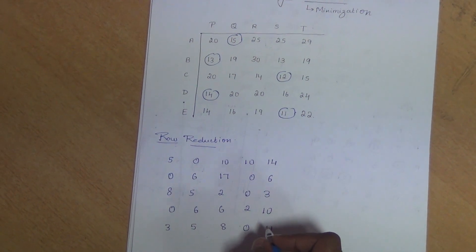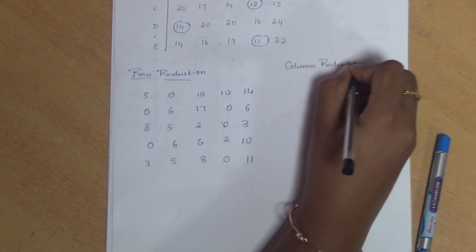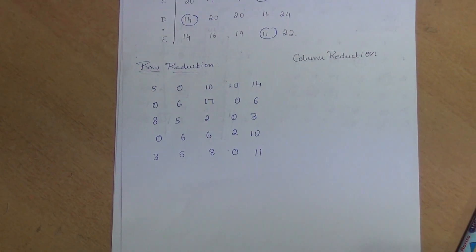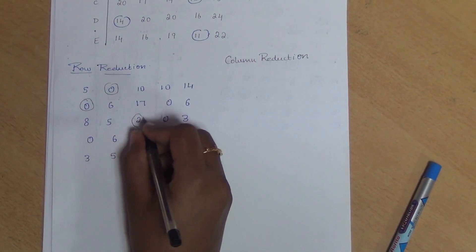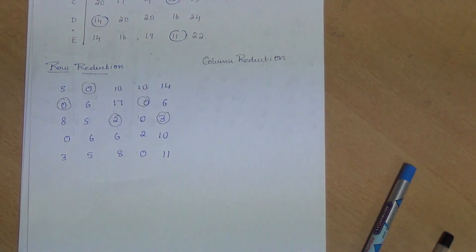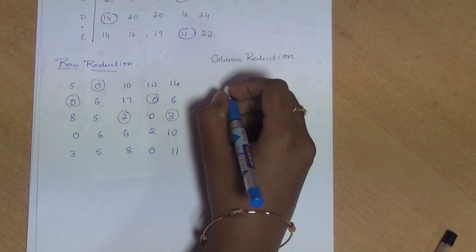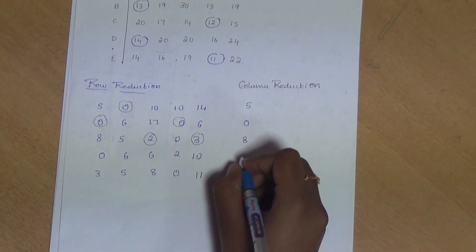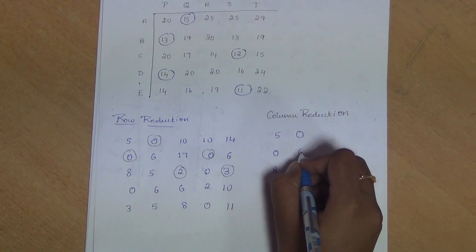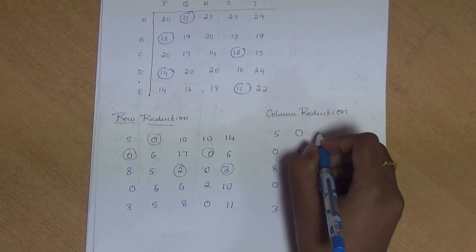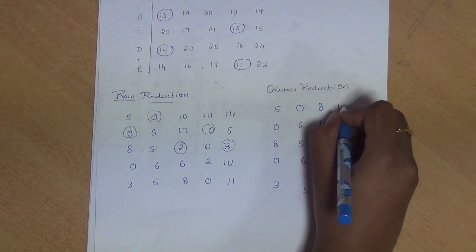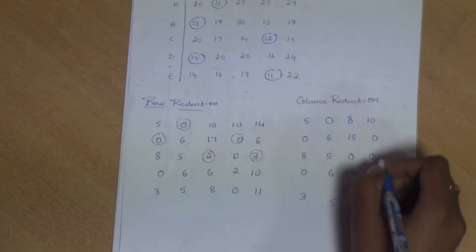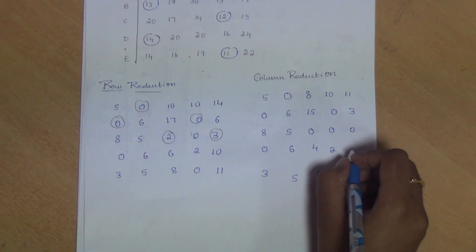After the row reduction we follow with the column reduction. We find the smallest value in each column: first column is 0, second column is 0, third column is 2, fourth column is 0, and fifth column is 3. Subtracting, first column gives 5, 0, 8, 0, 3; second column gives 0, 6, 5, 6, 5; third column gives 8, 15, 0, 4, 6; fourth column gives 10, 0, 0, 2, 0; and last column gives 11, 3, 0, 7, 8.